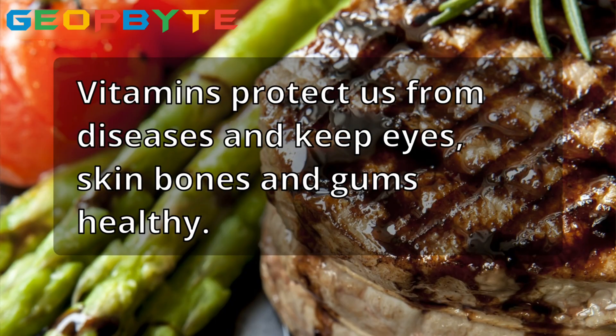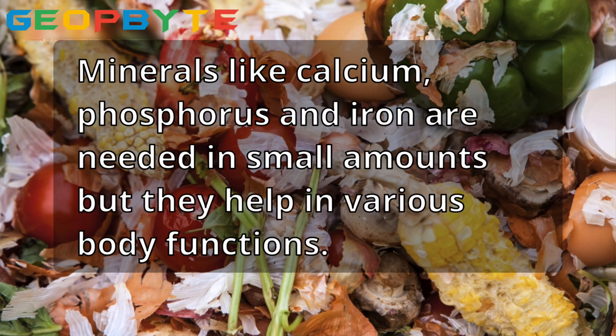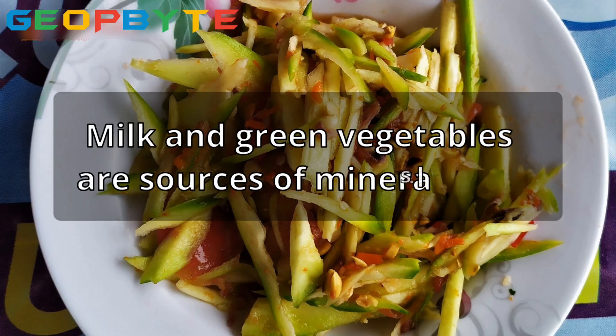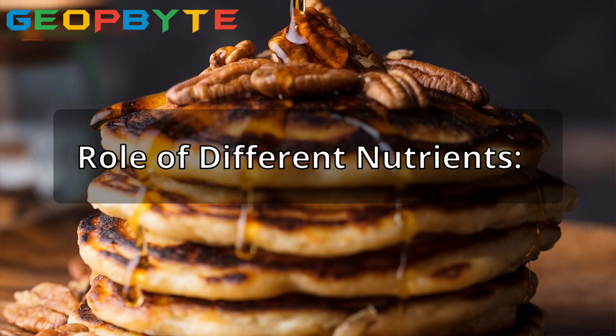Vitamins protect us from diseases and keep eyes, skin, bones, and gums healthy. Fruits and vegetables provide vitamins. Minerals like calcium, phosphorus, and iron are needed in small amounts but help in various body functions. Milk and green vegetables are sources of minerals.